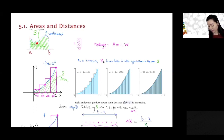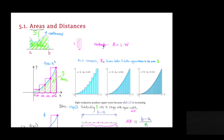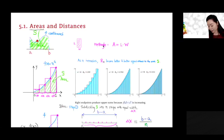We're going to have a continuous curve that means it has no break on this interval a to b. Then what will be this area? Suppose this is a positive function. What will be the area under the curve? So today we're going to investigate on that.